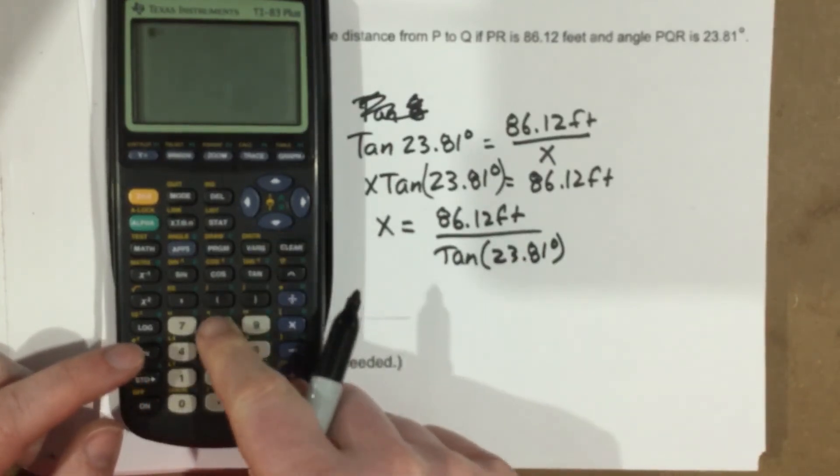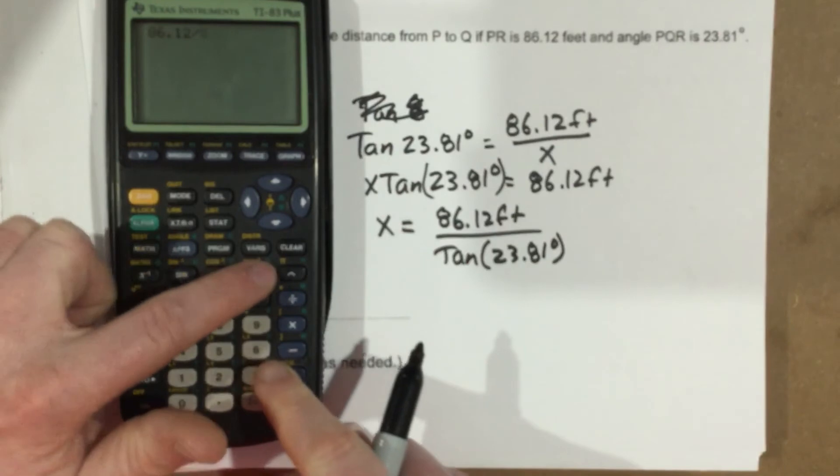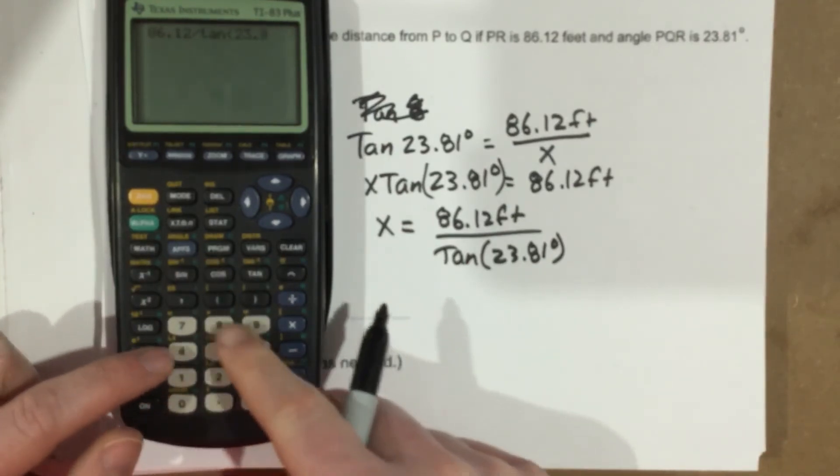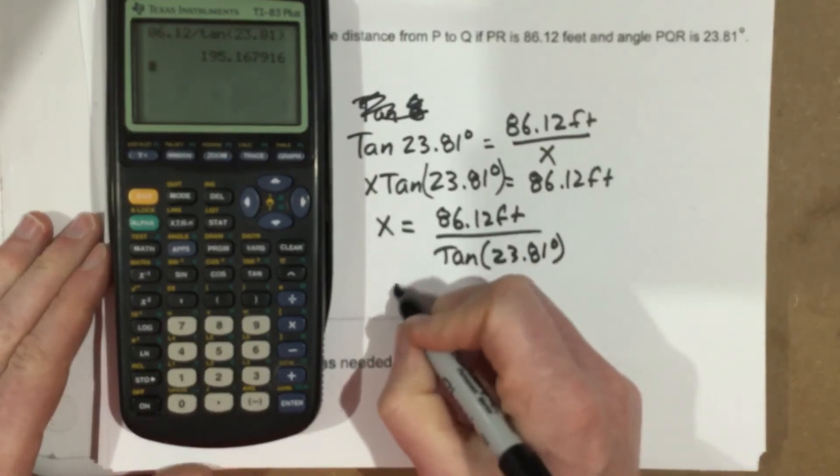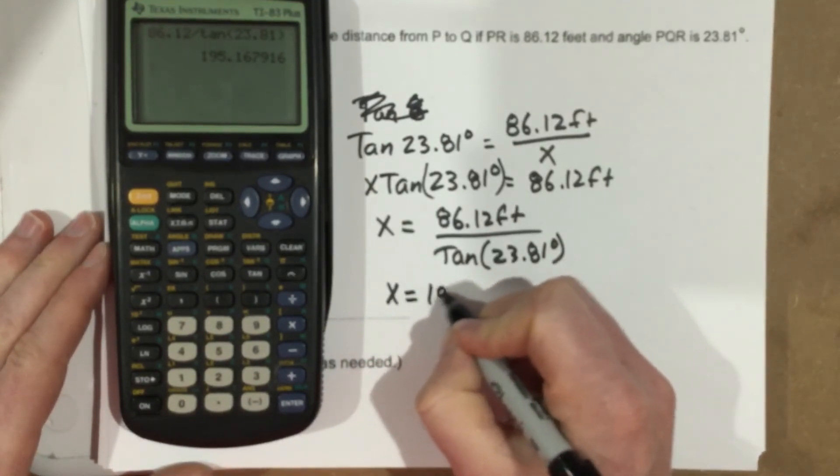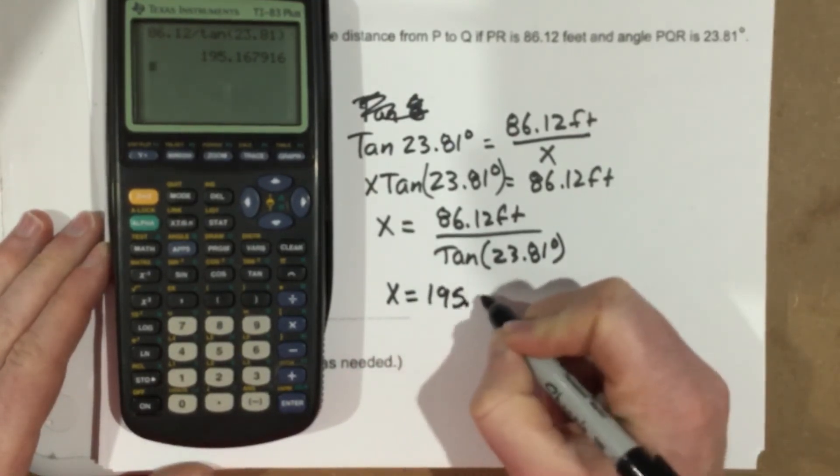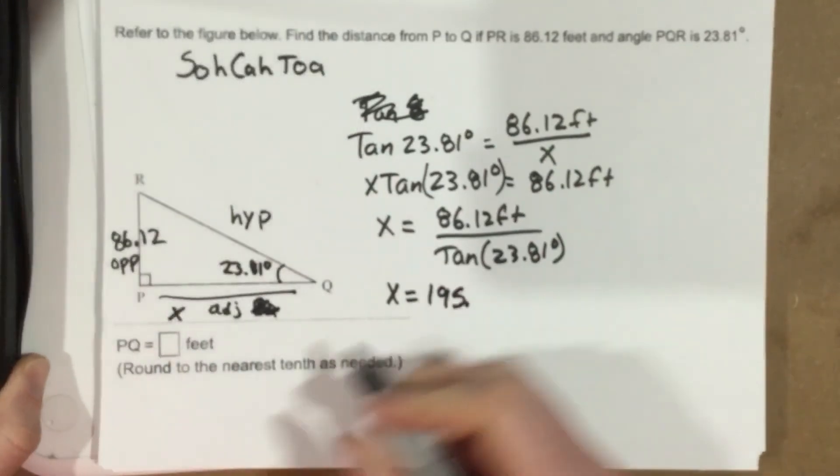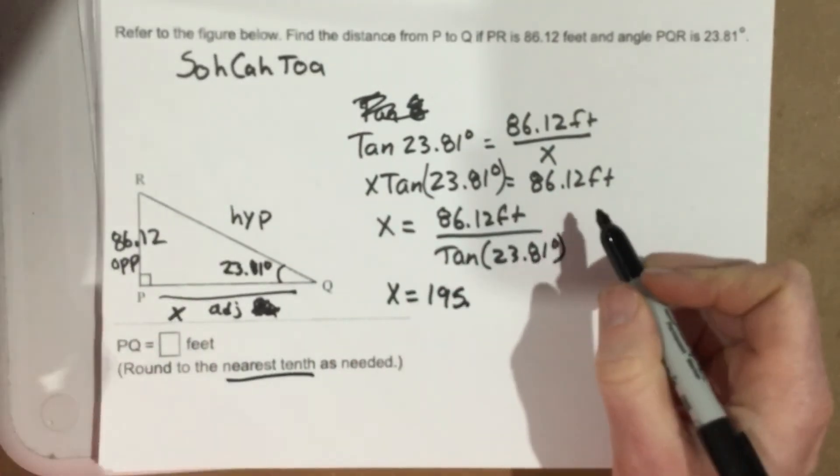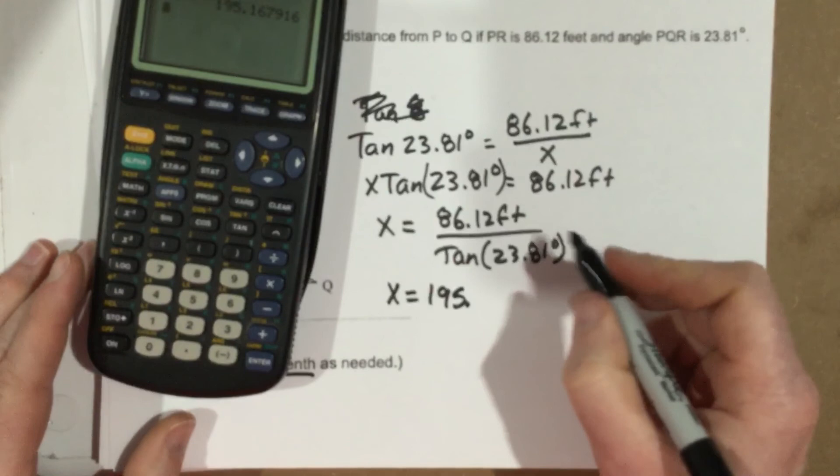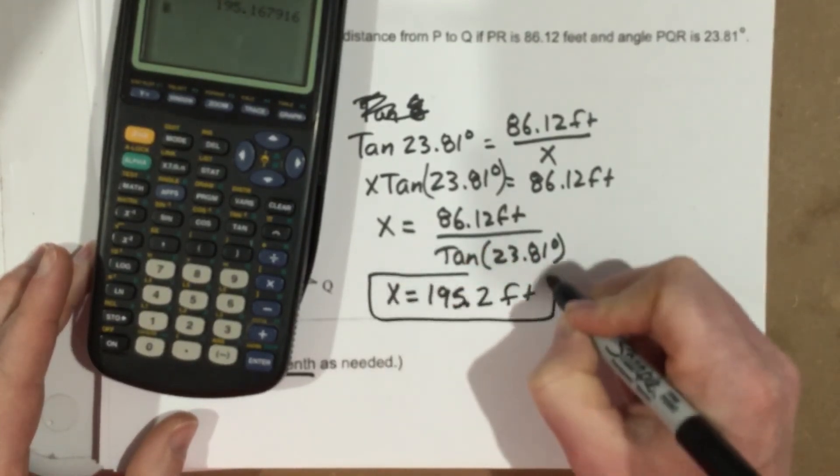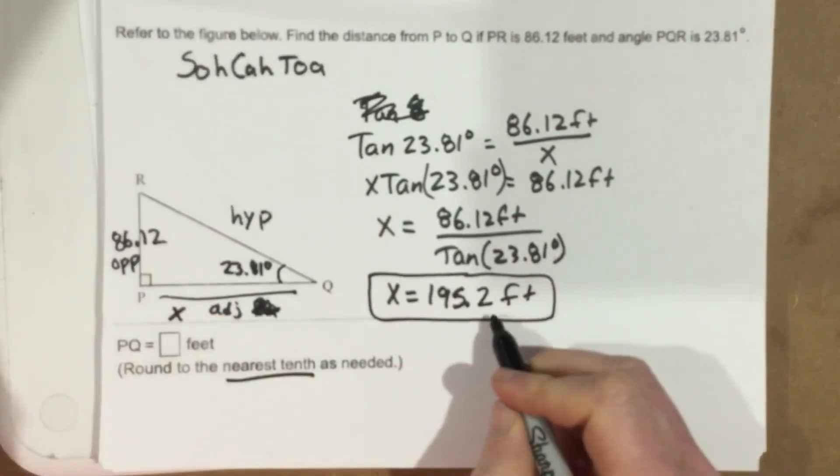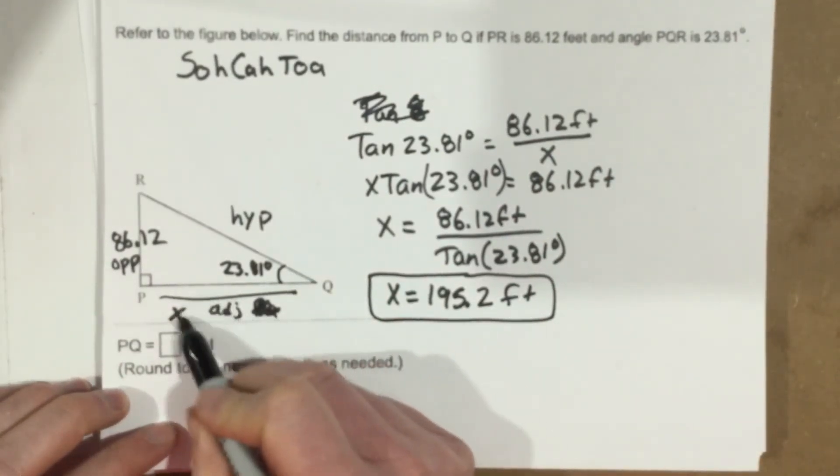And we can plug this in the calculator. So we're going to say 86.12 divided by tan 23.81. That tells us that our X value is 195, and they want us to round to the nearest tenth. So that's 195.2 feet. And that is the length of this side here, P to Q.